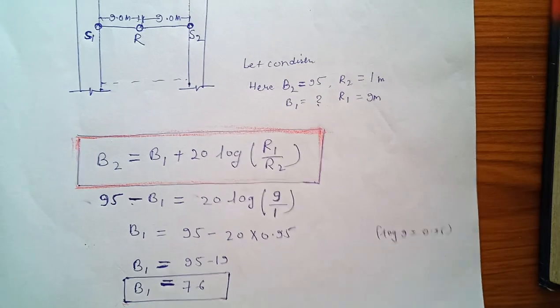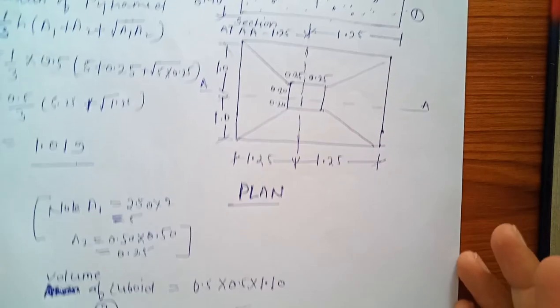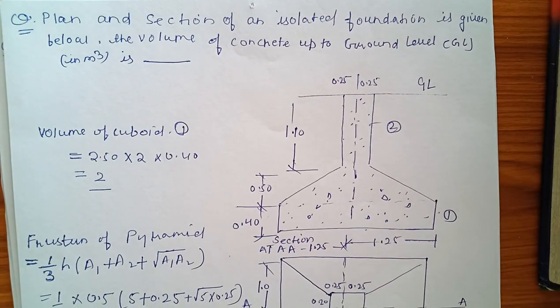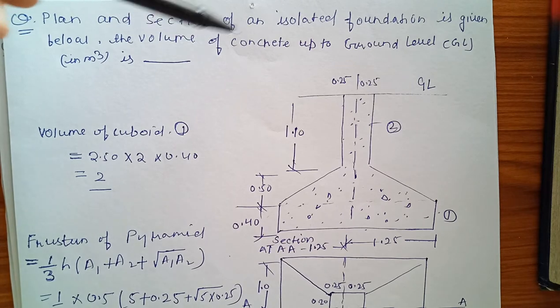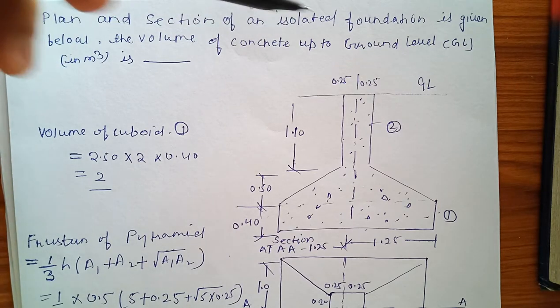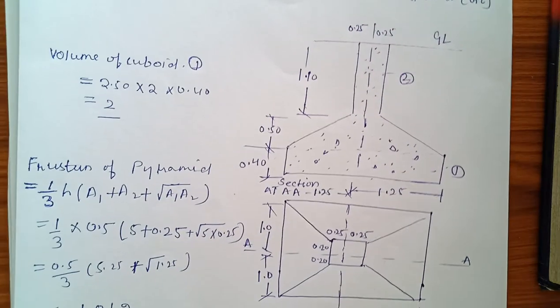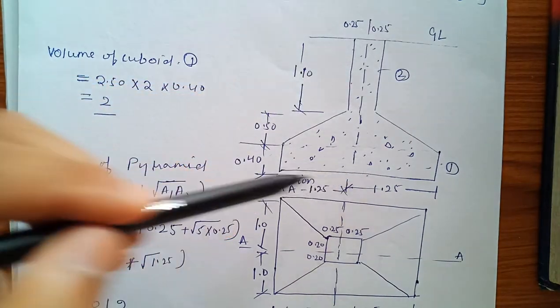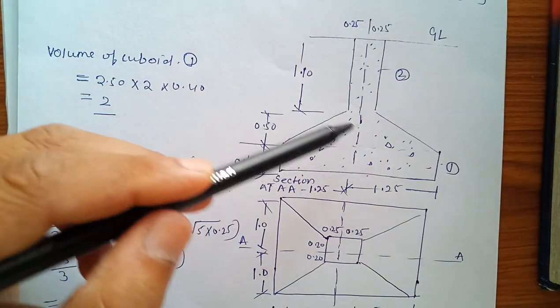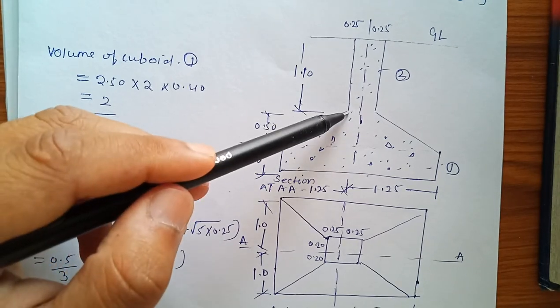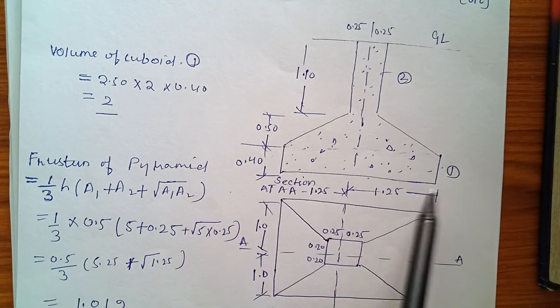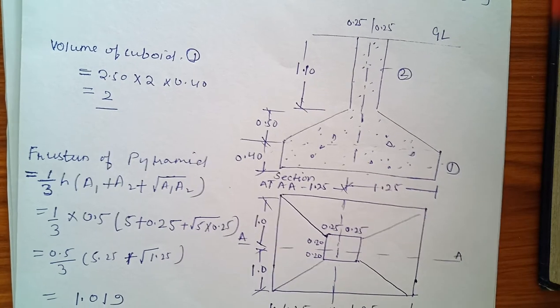Then another question: plan and section of an isolated foundation is given and we have to find out the volume of concrete up to ground level. In this type of question, what we do is divide this foundation section into three parts: cuboid here, then this is the frustum from here to here, and this is another cuboid.